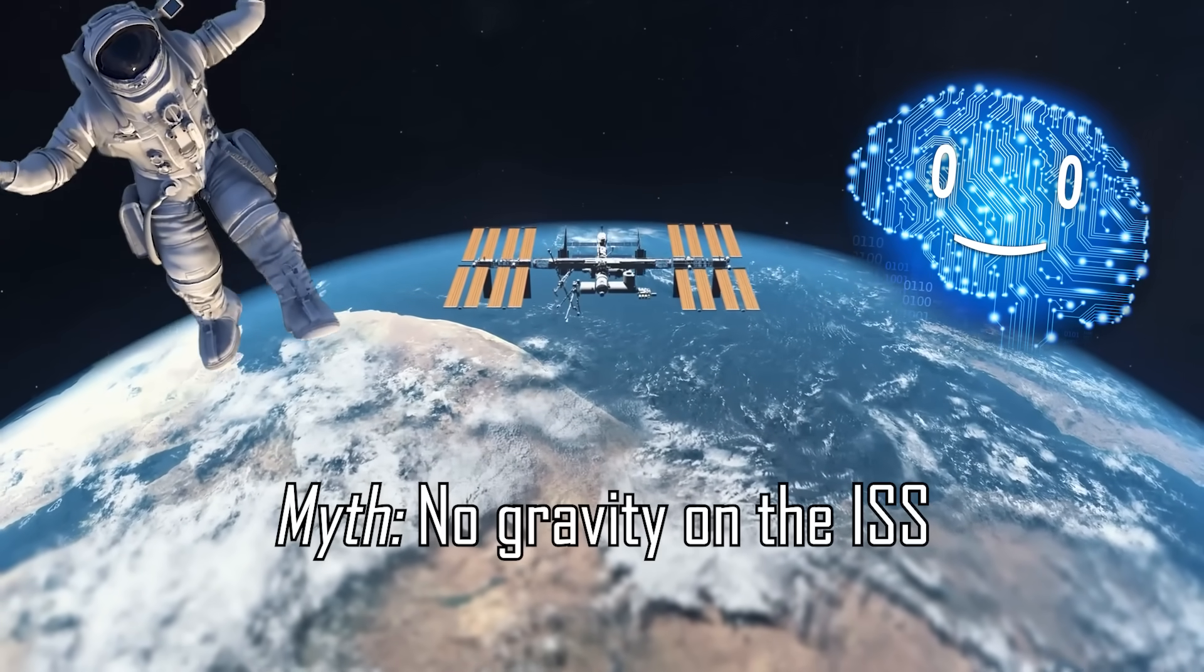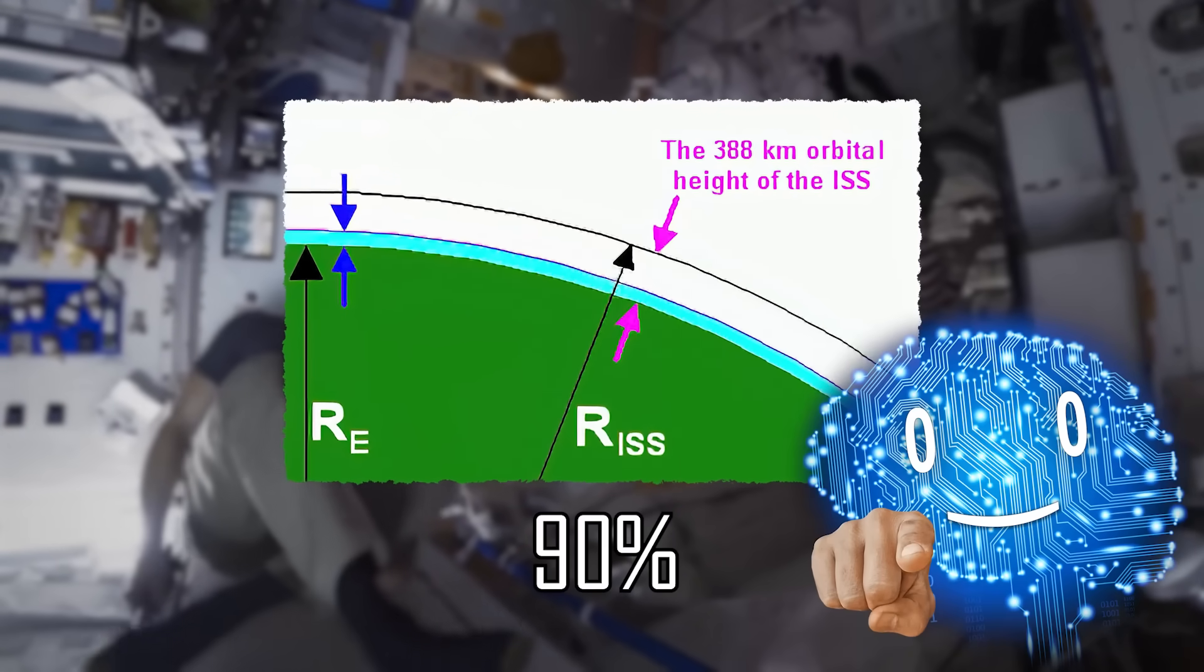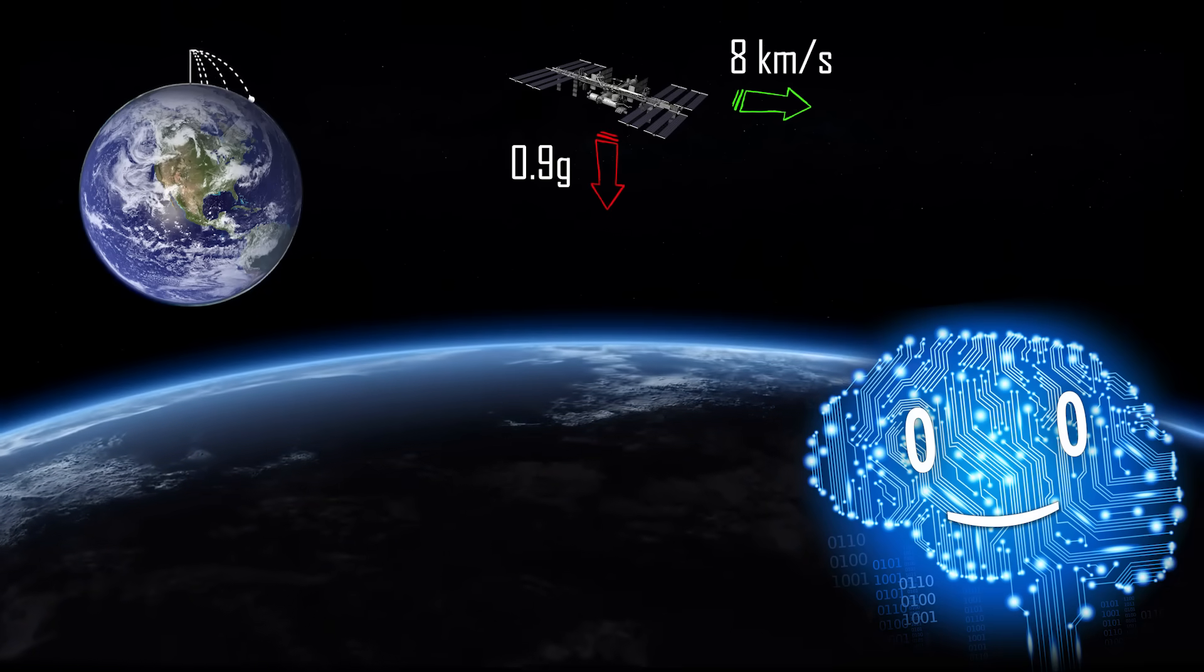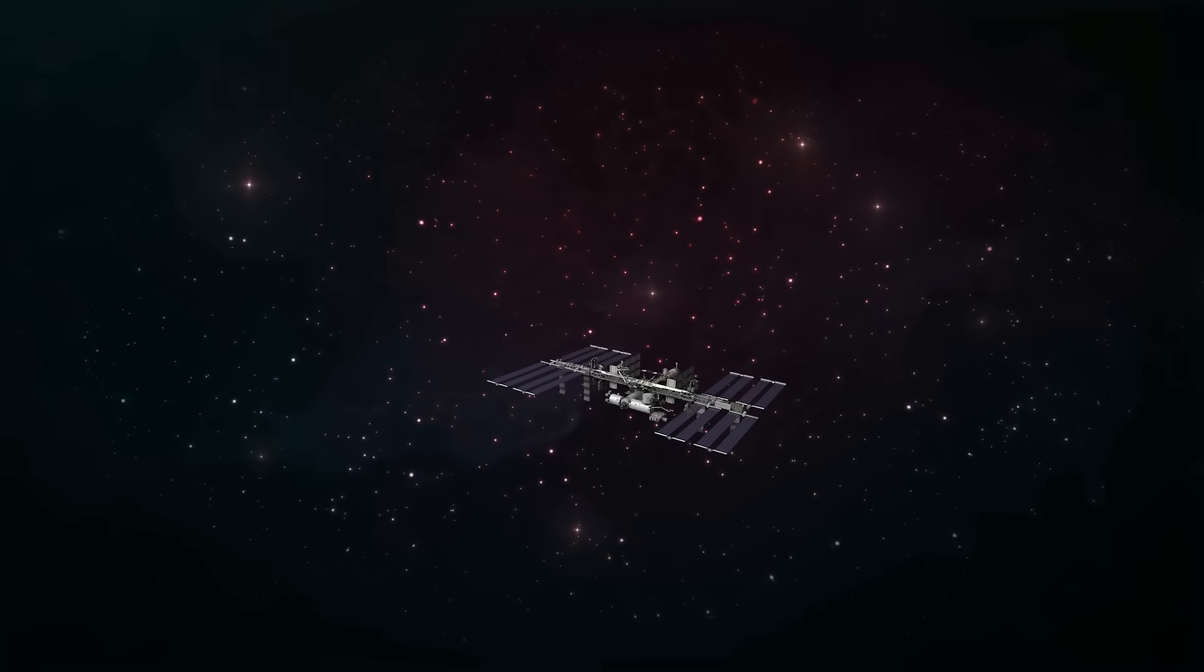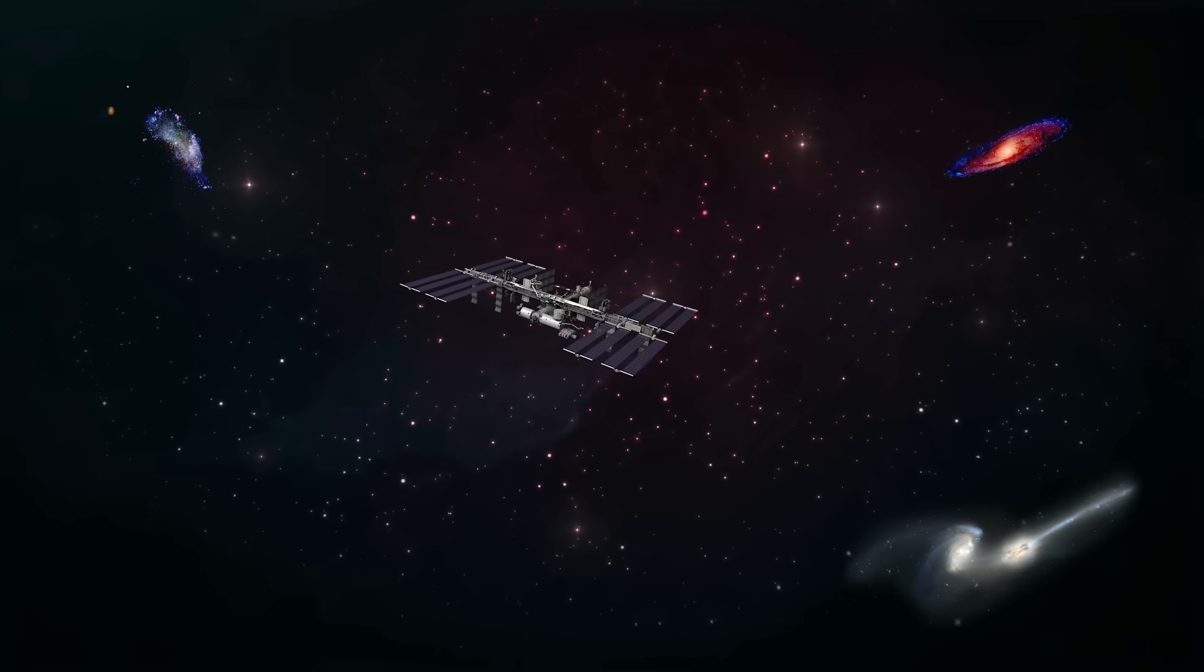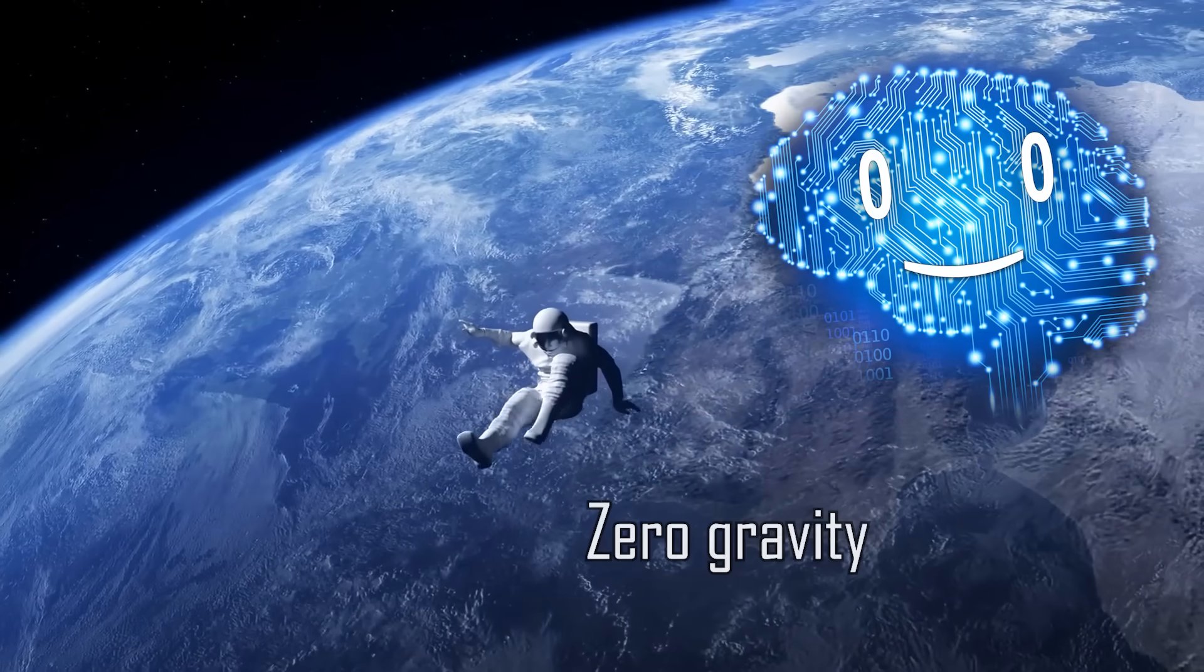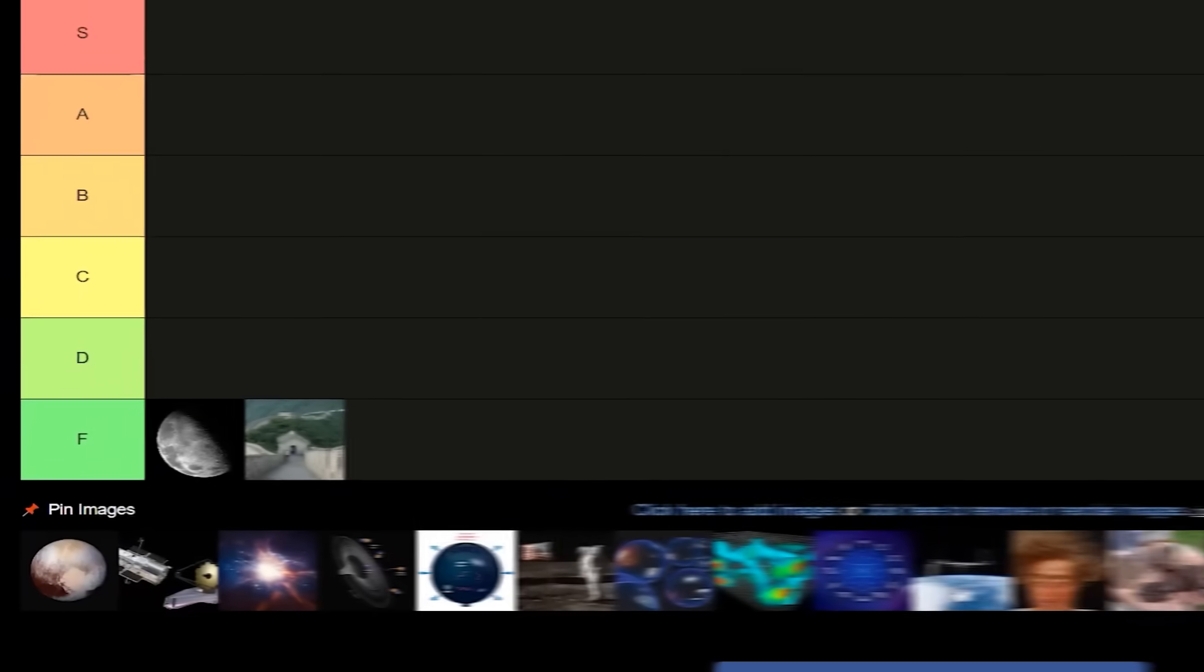Zero gravity exists on the ISS. Gravity is still about 90% as strong up there as it is for you right now. They float because the whole space station is in a never-ending freefall around Earth that thankfully continuously misses it. Even if you flew millions of light-years into intergalactic space, you'd still feel a faint pull from distant galaxies. Zero gravity can't exist, the closest you can ever get to it is microgravity. F-tier.